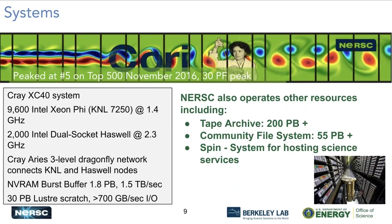Our main production system is Cori — it's a Cray XC40. It peaked at number 5 back in 2016. One thing that's sort of sad about HPC systems is they don't necessarily age very well — there's always newer systems that jump ahead. In addition to Cori, we also operate a number of other resources, including a large tape archive with 200-plus petabytes of data, a community file system for storing results accessible over a long period of time, and a system called Spin for hosting containerized science services.